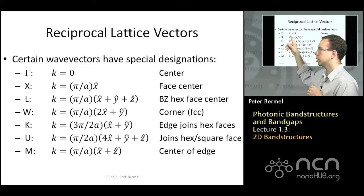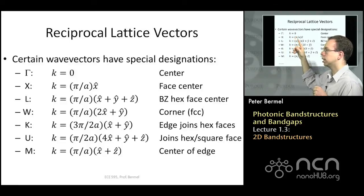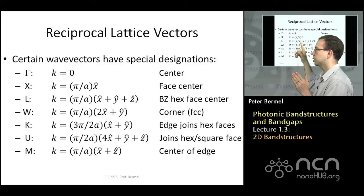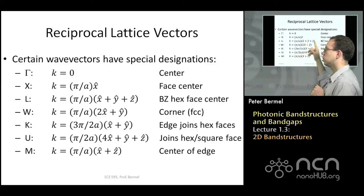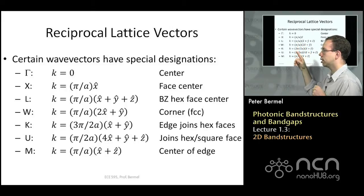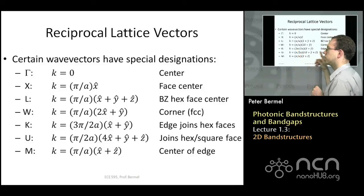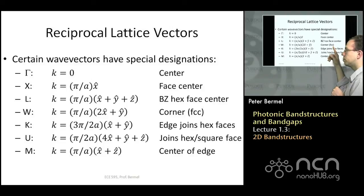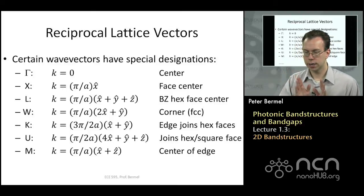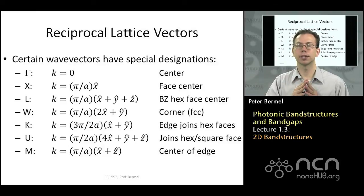The most common k-point is the gamma point, representing k=0, right at the center of the Brillouin zone. You also frequently see the X point, extending all the way in the x-direction, which appears in both 1D band structures and face-centered cubic structures. Other high symmetry points include L, W, K, U, and M, which are superpositions of x, y, and z components. Depending on the symmetry of the problem — face-centered cubic, hexagonal, etc. — each set of lattice and reciprocal lattice vectors gives rise to its own set of high symmetry points in the irreducible Brillouin zone.